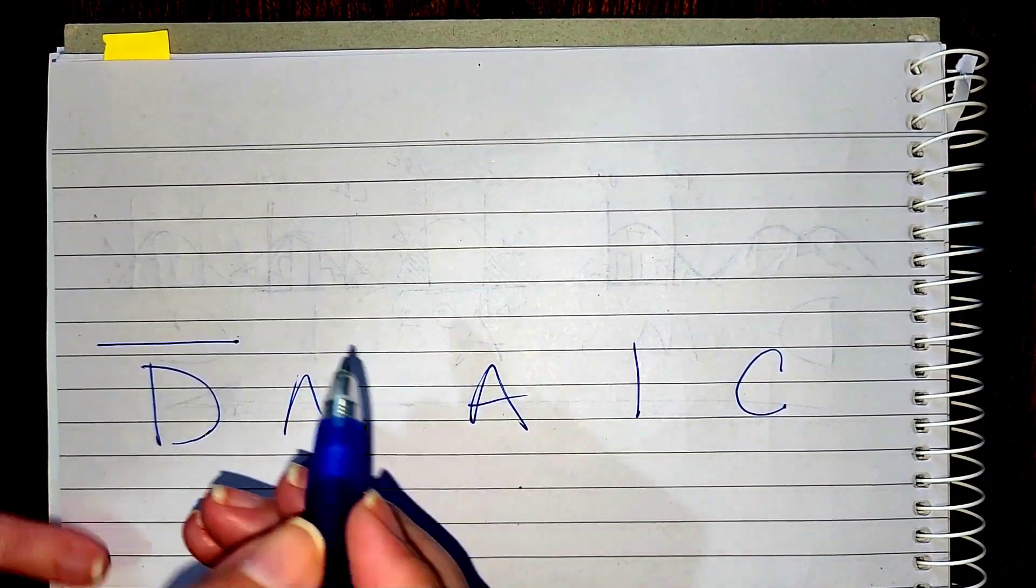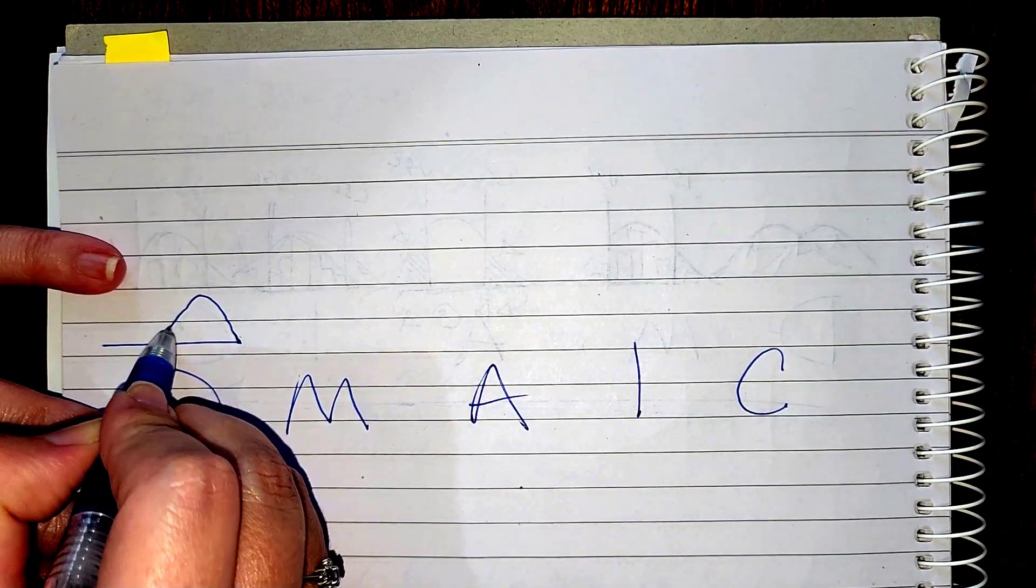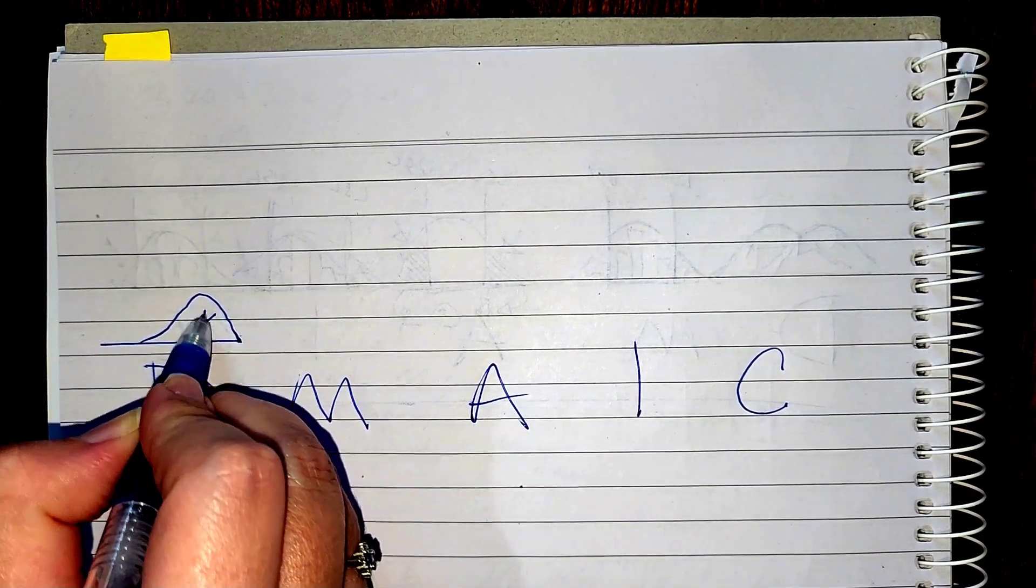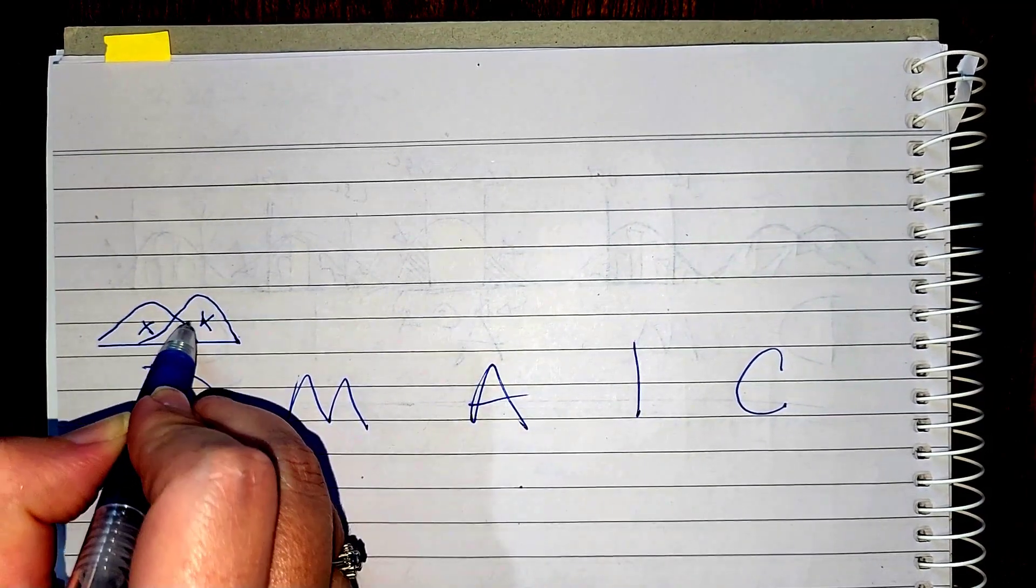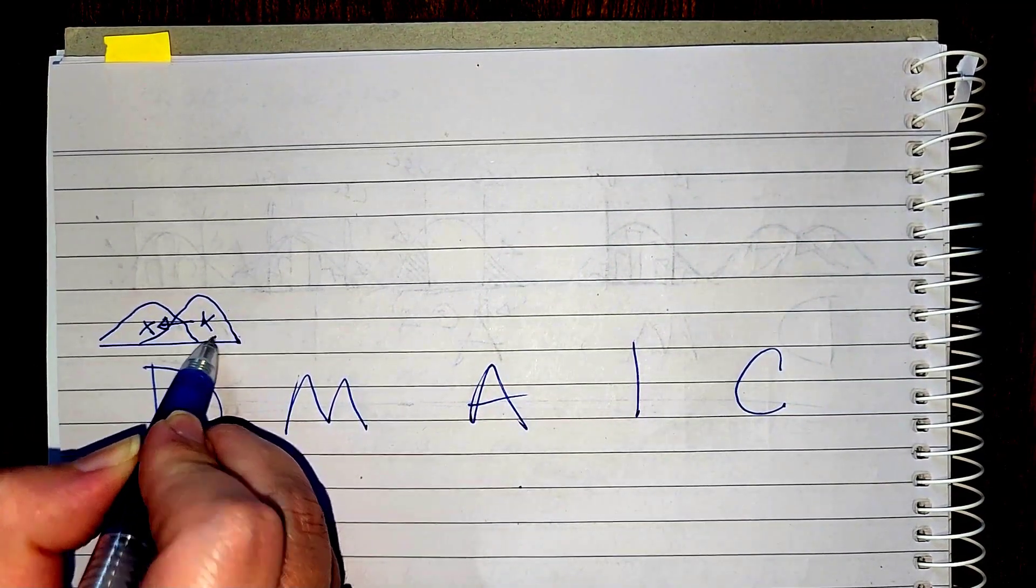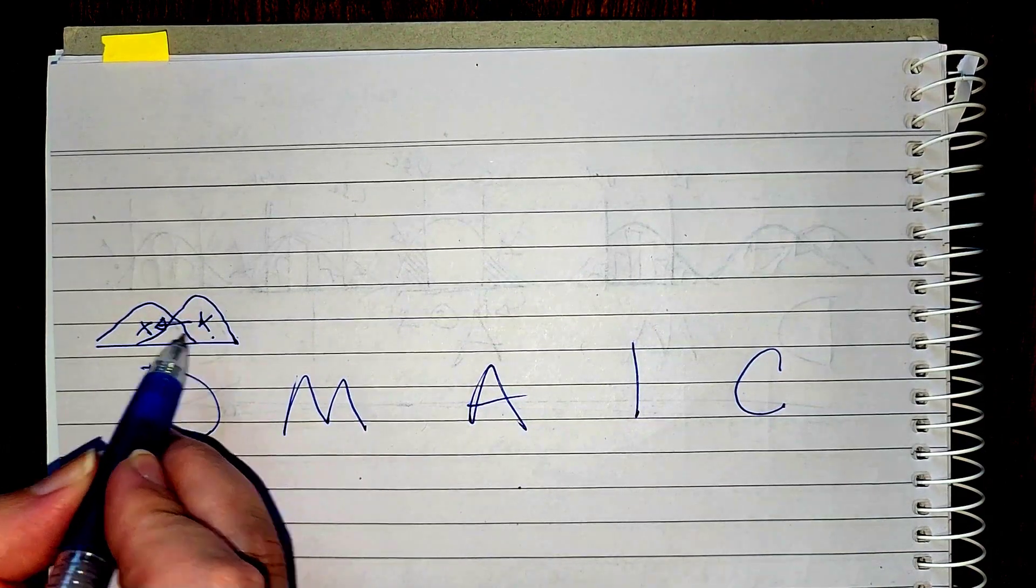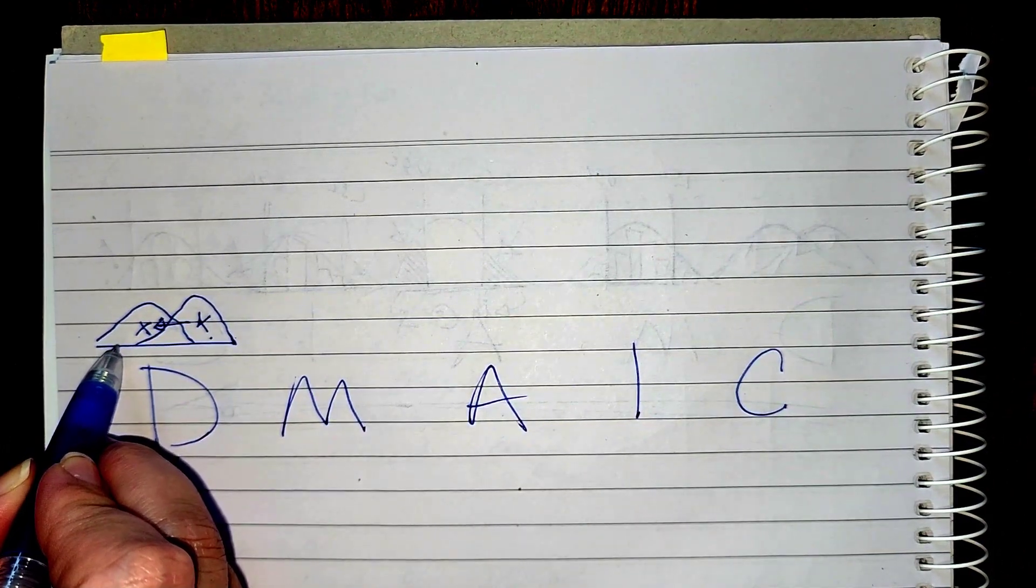If we look at the define phase, we might see our process as we think it is today, and we're validating with our team where we want to go. So our process today is here, our average might be there, and we want to see it move to the left.